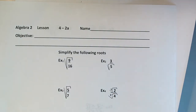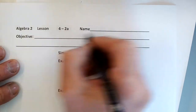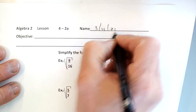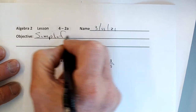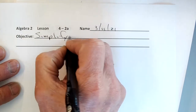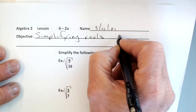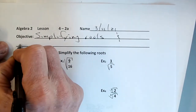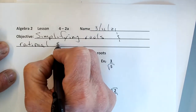We are live. Today what we're talking about is simplifying — what is it, 311? Simplifying roots, and we're also going to talk about rational exponents.